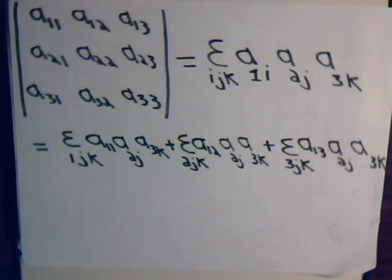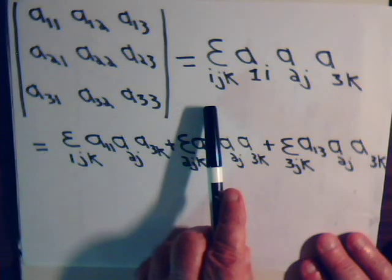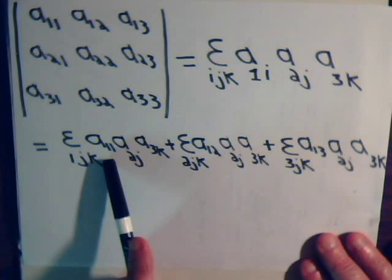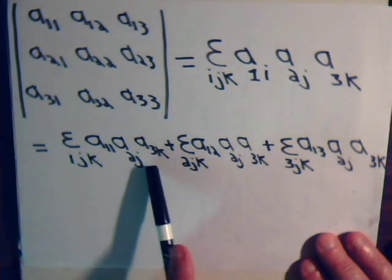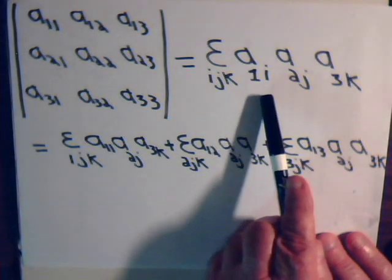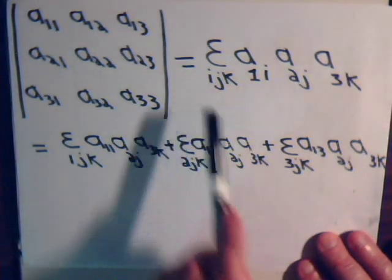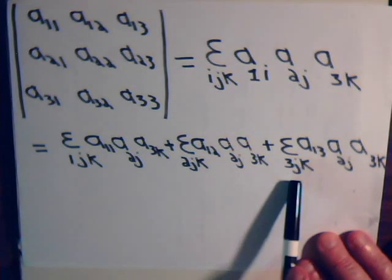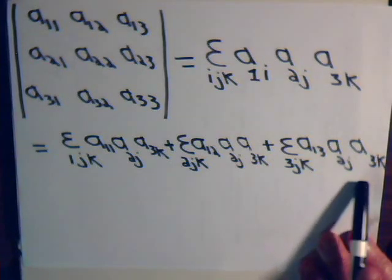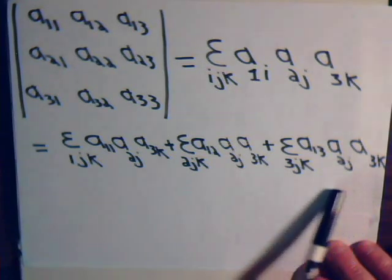So let's do that just for i. i is going to take on values of one, two, and three. First, i equals one: we have epsilon 1, j, k times A1 1 — then those stay the same. Now i takes on the value two: we have A1 2, and those stay the same. Then i equals three: epsilon 3, j, k times A1 3 — those stay the same. So we've summed over i, and that gave us this expression.